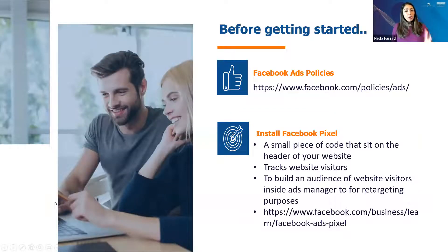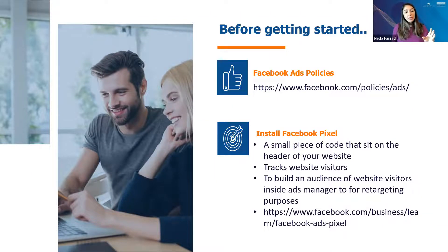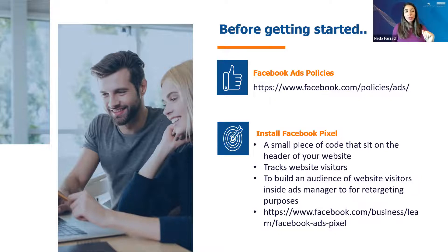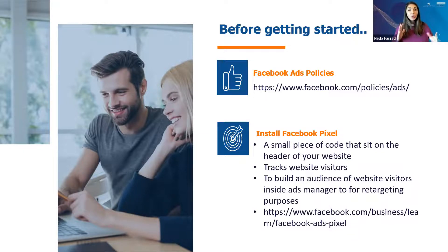Let's get started with Facebook ads. Two things to consider: number one is the Facebook Pixel — it's a code you put in the header of your website. The second is the Facebook Ads Policy. I recommend getting yourself familiar with it, spending a couple of months reviewing it — it's definitely worth doing. The reason is, when you're creating organic posts and decide to boost one, if the copy or image violates certain rules, it will get rejected. Certain industries have specific rules.